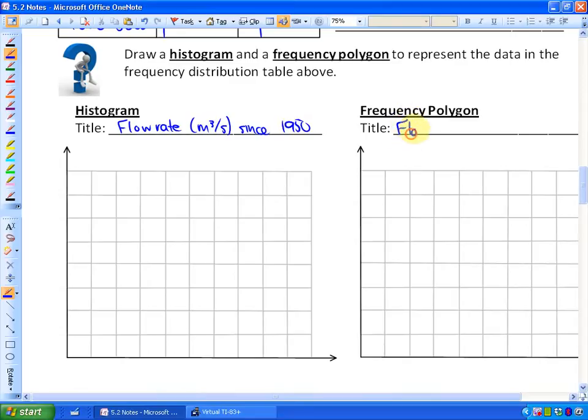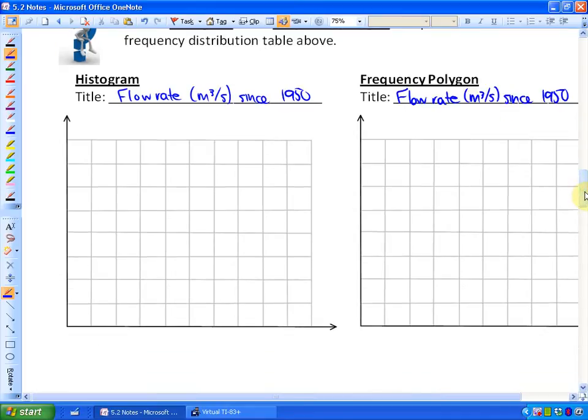And the frequency polygon, or in other words, the line graph would have the exact same title. So there's a lot of similarities between a bar graph and a line graph. I will show you when they're different. The next thing to do is to label your axes. So these axes, the bottom axis will be the flow in meters cubed per second. And the nice thing is that we've already come up with the intervals, so we know that we're going up by five hundreds.